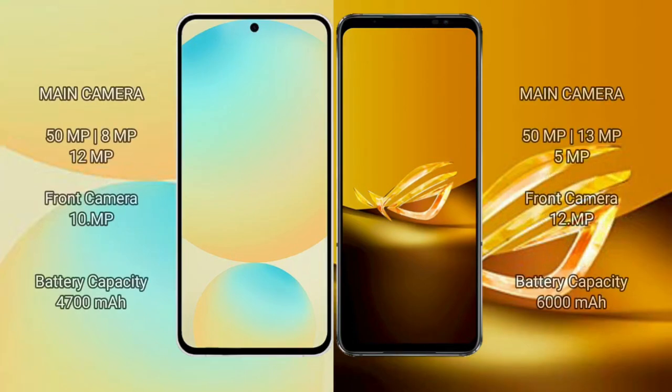Samsung Galaxy S24 FE has a triple camera setup: 50MP plus 8MP plus 12MP rear cameras, and a 10MP front camera. Asus ROG Phone 6D also has a triple camera setup: 50MP plus 13MP plus 5MP rear cameras, and a 12MP front camera.